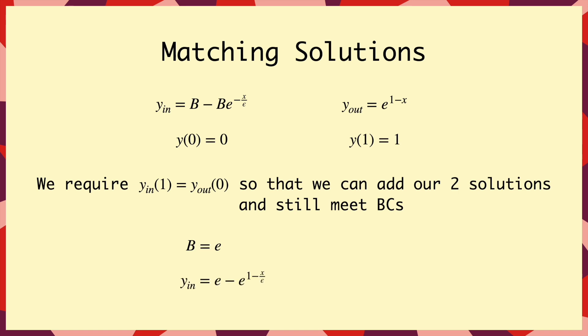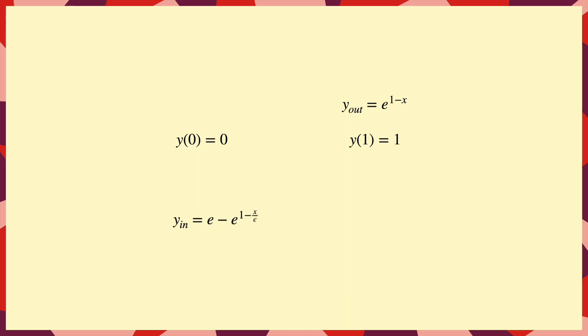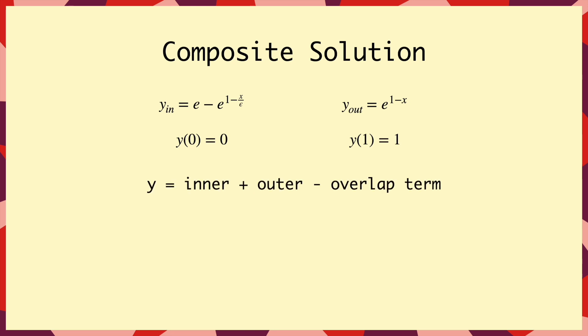Then the last thing to do is work out our final answer, often called the composite solution. And this is just the inner solution plus the outer one minus the overlap term. So we can work out what that gives us, and then at this stage it's always good to check that the boundary conditions do actually work, and that we haven't made a mistake somewhere in the matching process. And when that's done, we're all finished.